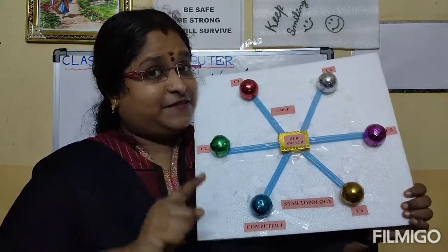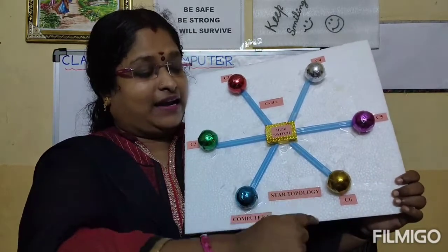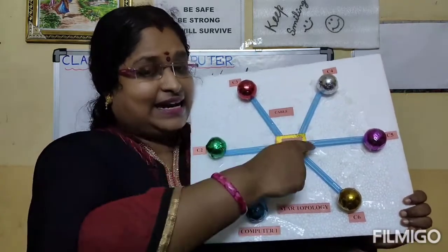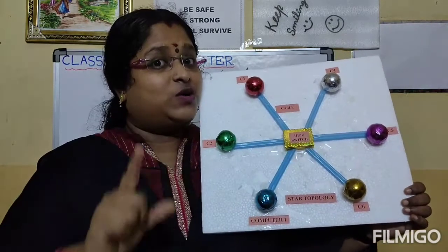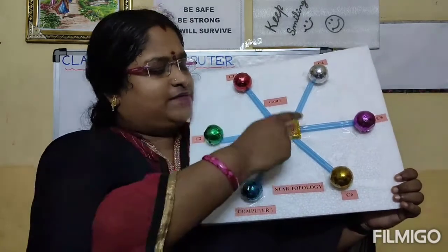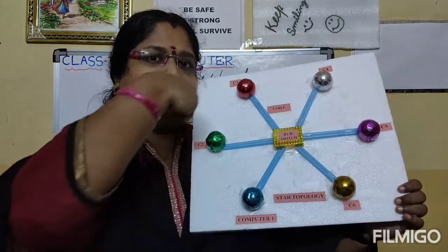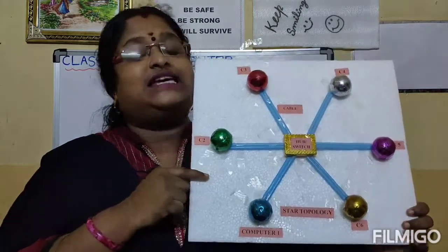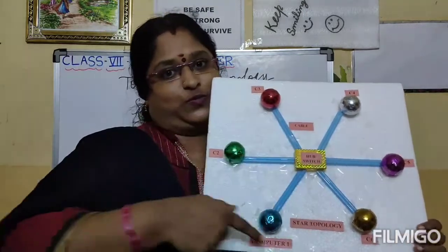It is also difficult to expand. If you want to add a new PC, it requires a direct connection with the central controlling device, so there are more chances of error. Also, if the central controlling device itself fails, then the entire network will become failure. These are the advantages and disadvantages of star topology.